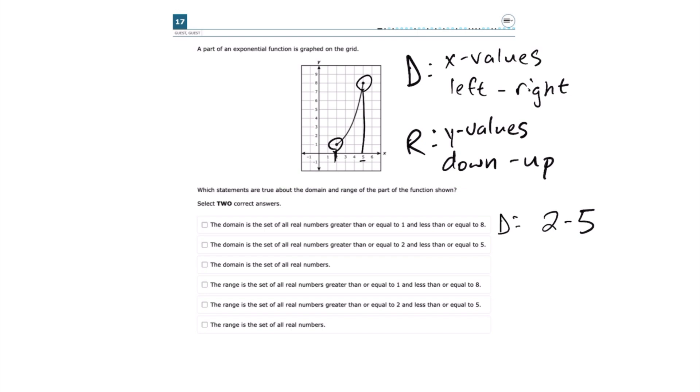Now, the way I know it could also be equal to 2 and 5 is that both of these points are filled in. If they were open circles, that would mean they would not include those numbers. But because they're filled in, we know it does include 2 and 5.